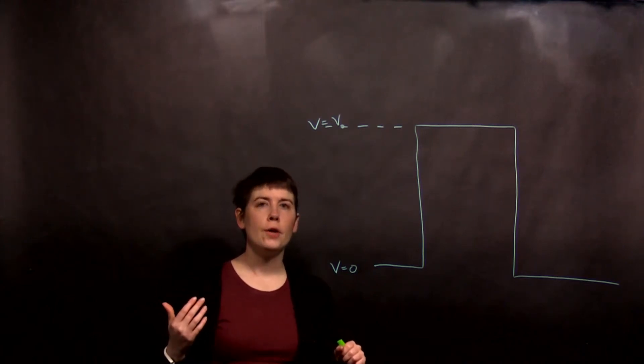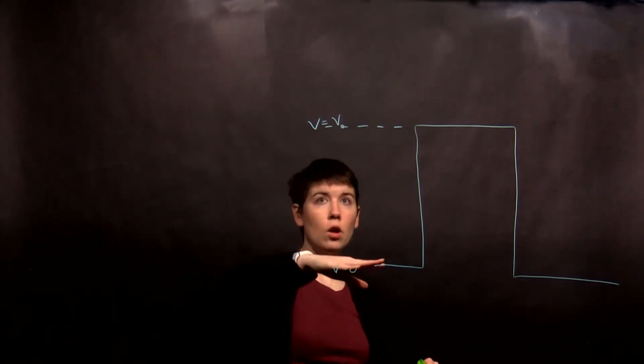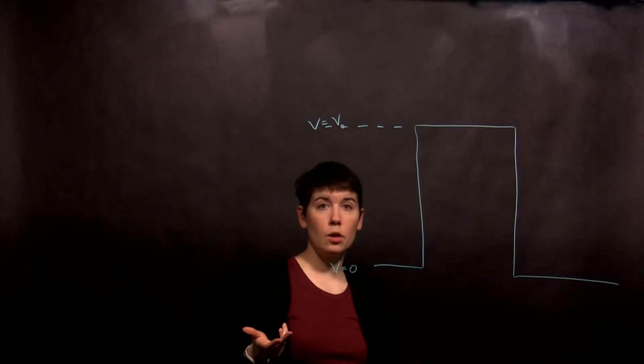Let's now talk about a barrier, meaning that your incoming particle is coming from a region where v equals zero and then it gets to a positive v. Now there's two different scenarios to think about.